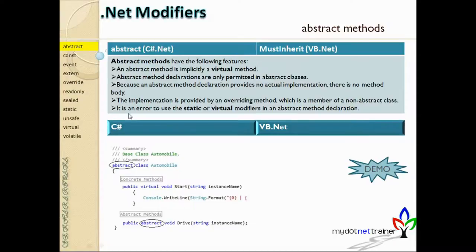It is also an error to use the static or virtual modifiers in an abstract method declaration. Static members have special behavior — they're specific to the class, not to an instance. That's why you cannot combine abstract and static on the same member.